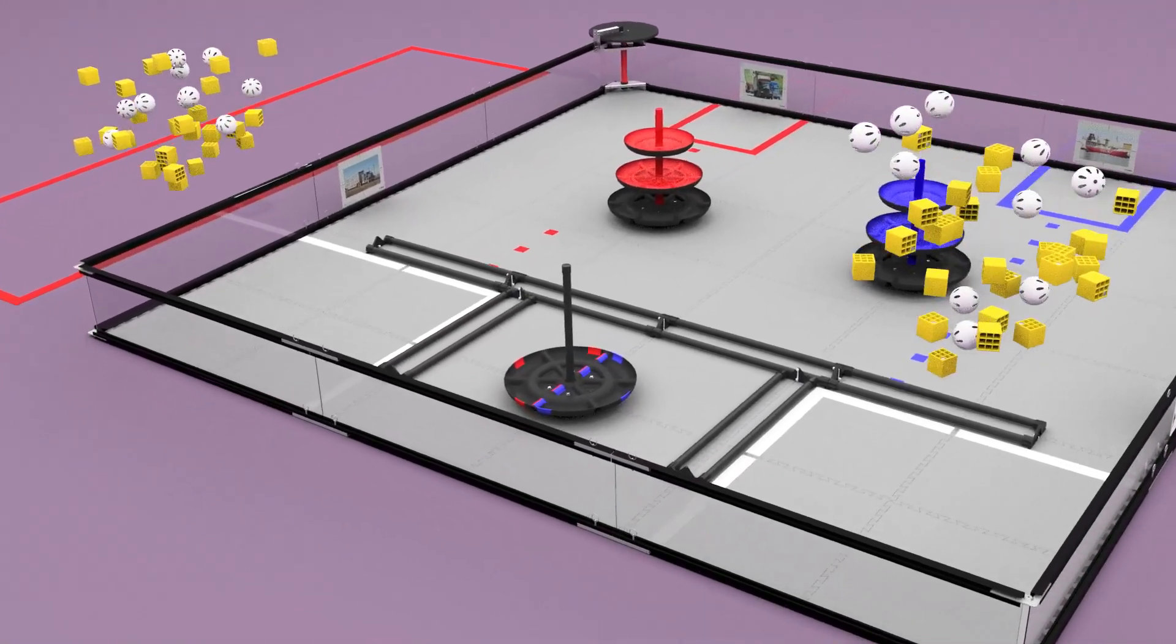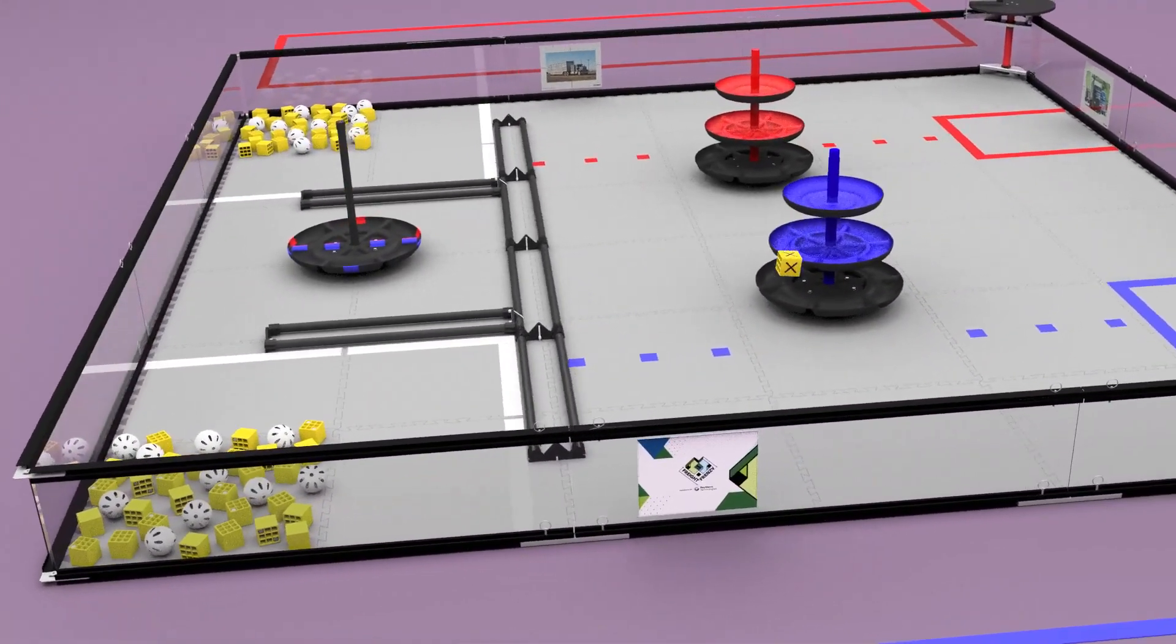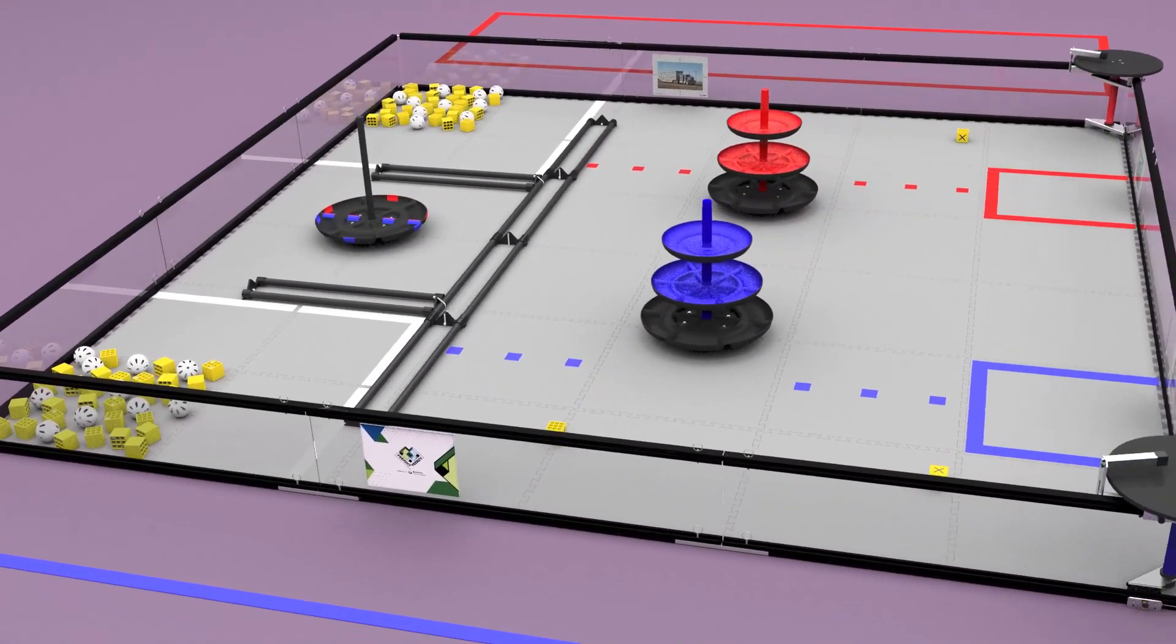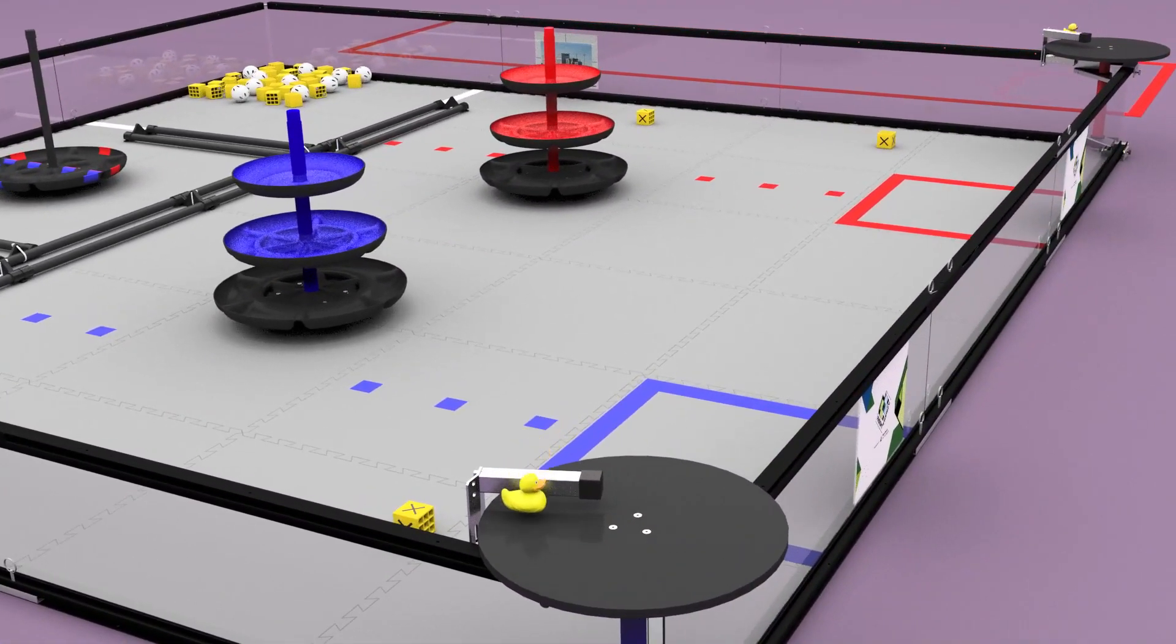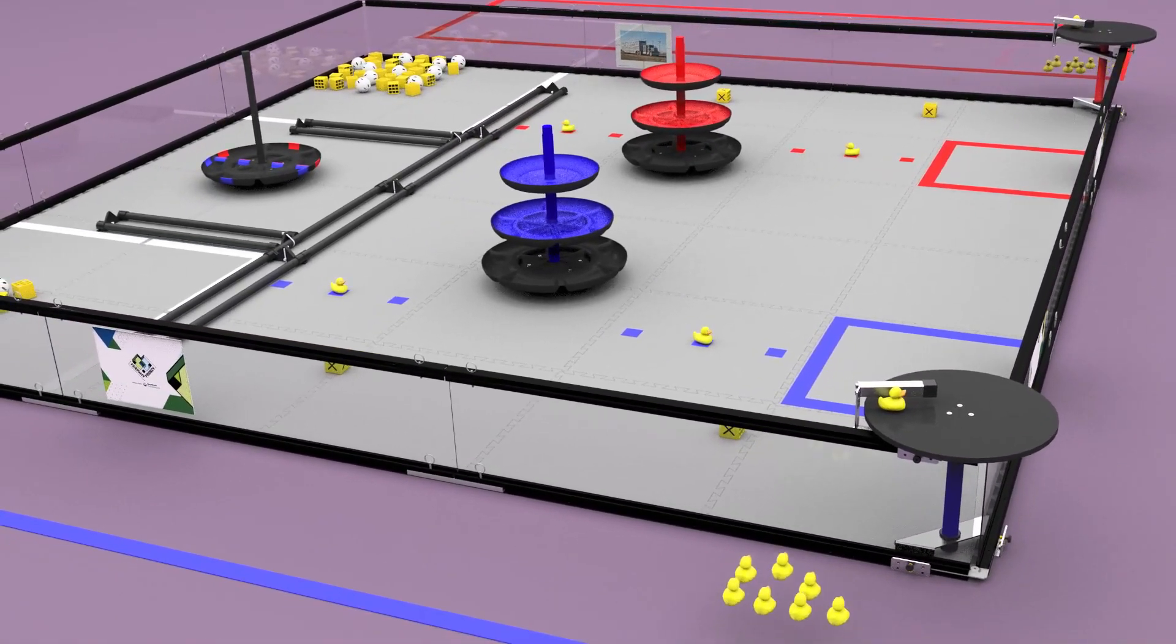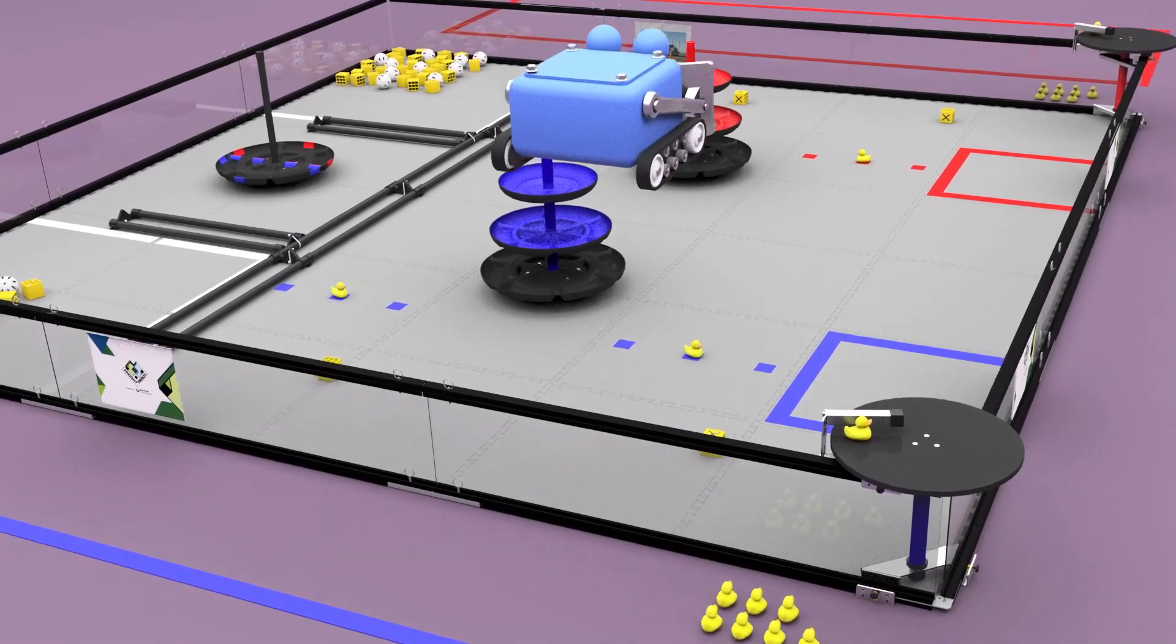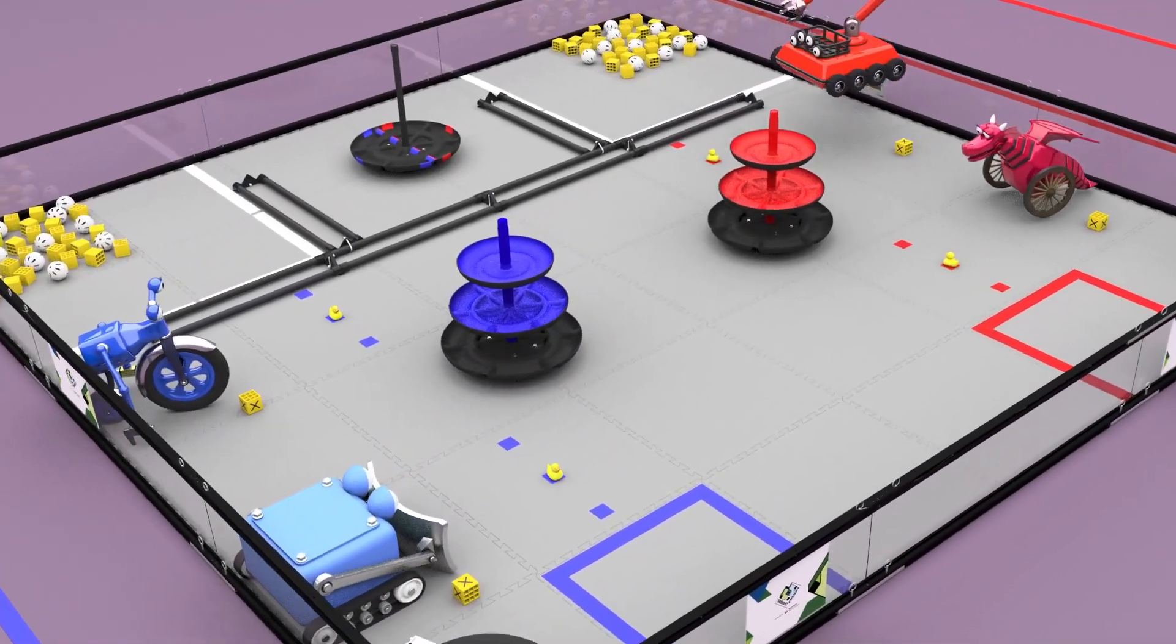Before each match, the freight is stored in the warehouses, and a pre-load box is placed onto the field for each robot. A duck is placed onto each carousel and in the middle position of each barcode. The remaining ducks are stored in the alliance loading docks. Teams then place their robots on the field, touching the wall adjacent to their alliance station, but not in a warehouse.